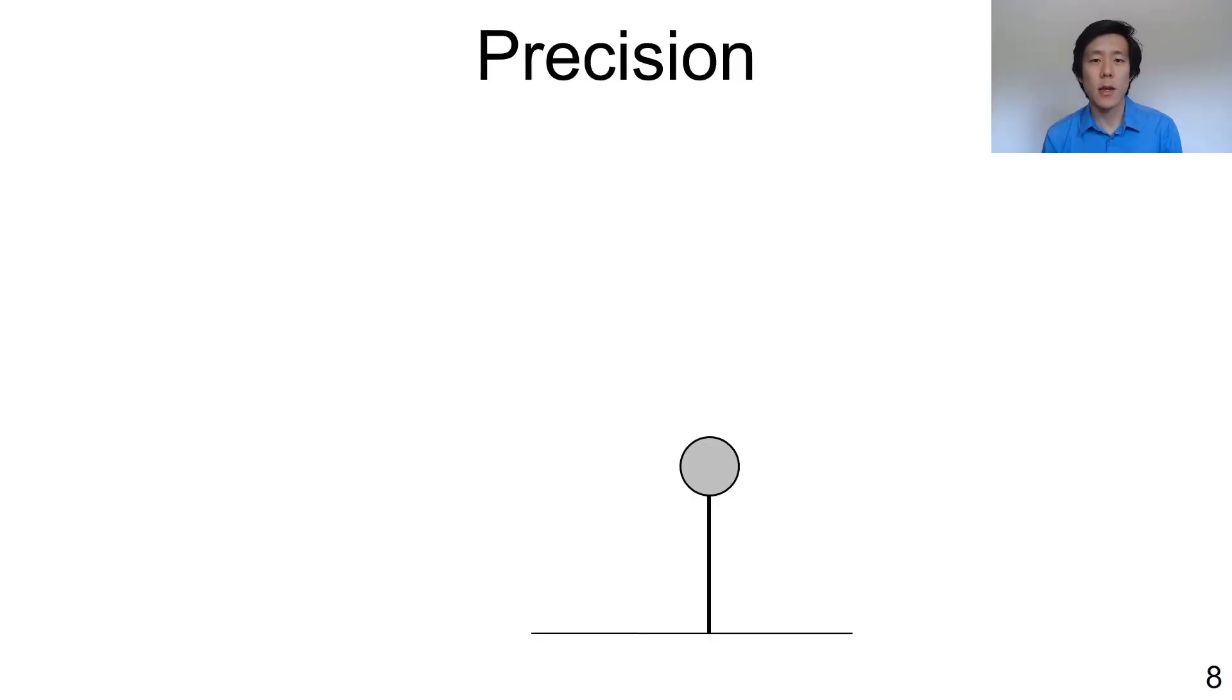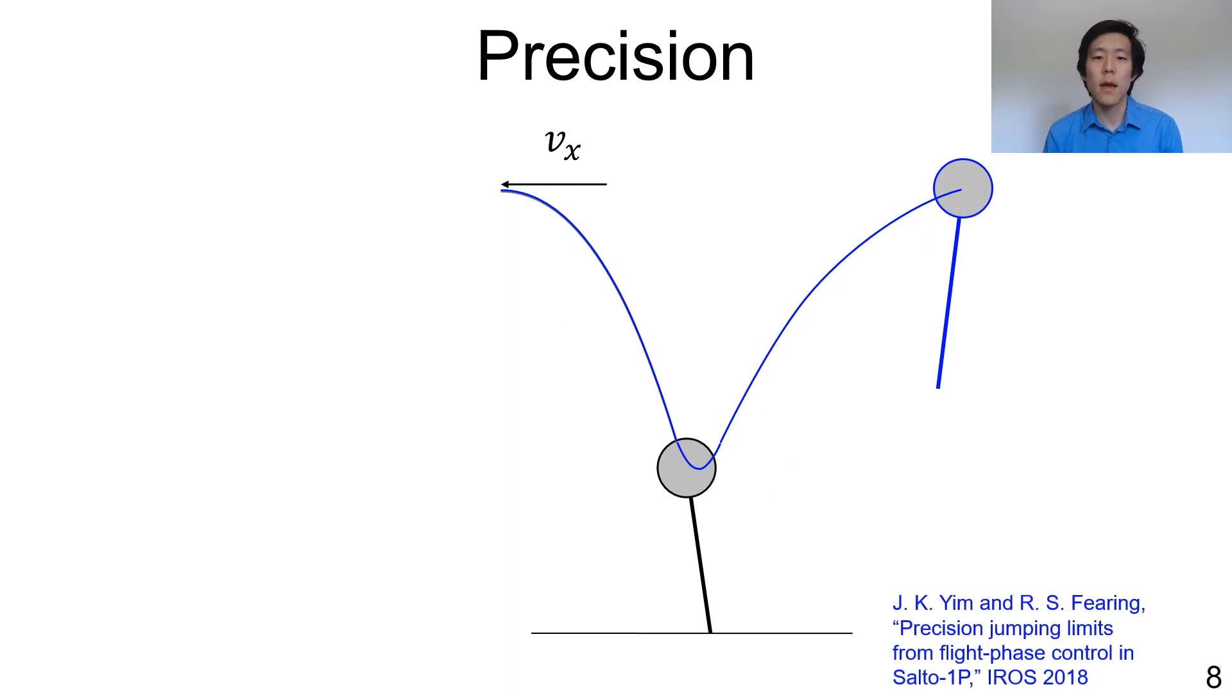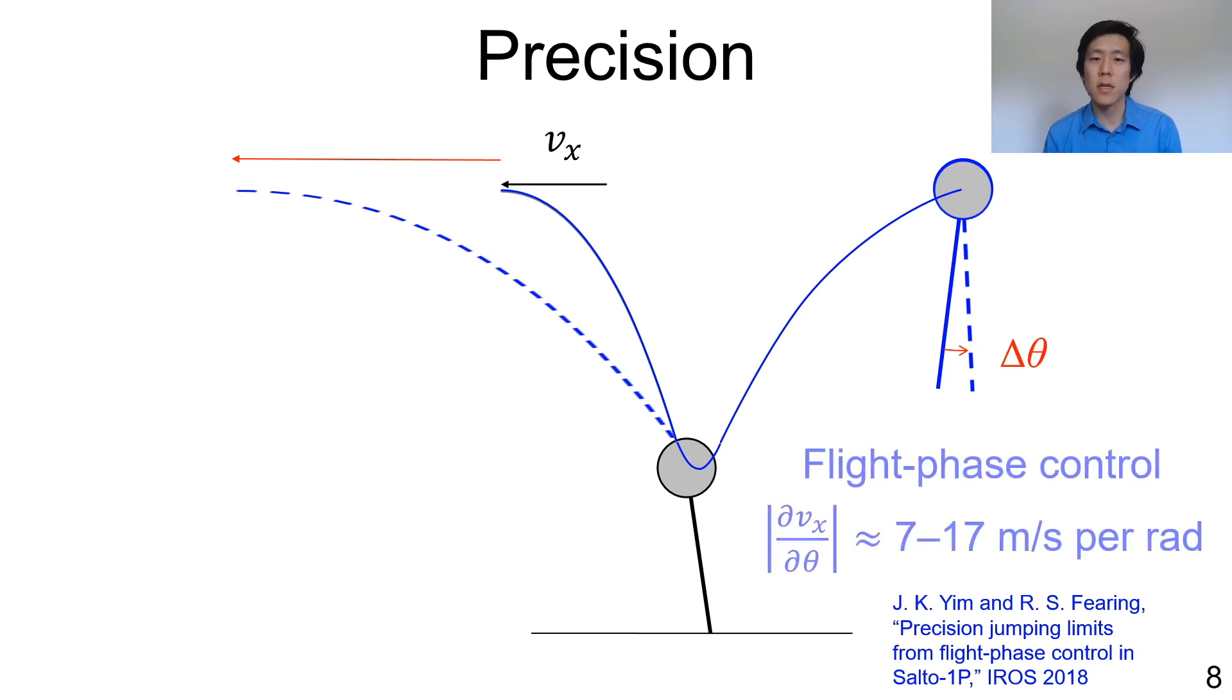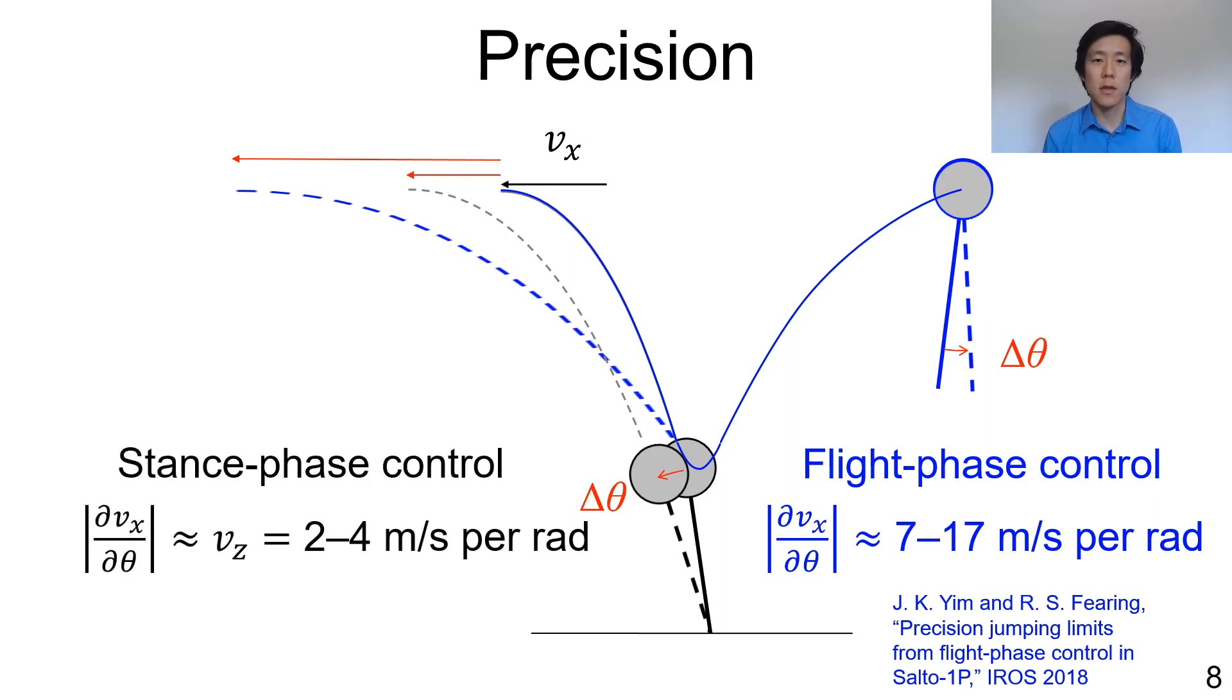We can now look at how precise we'd expect this motion to be. The horizontal velocity of the robot, and consequently the accuracy of the jump, will depend critically on the angle of the robot on lift-off, and we can compare the sensitivity angle to our previous work with flight phase control, in which the robot used touchdown angle in order to direct its next bounce. In our previous work, we showed that variation of the touchdown angle changed the horizontal velocity by about 7 to 17 meters per second per radian for Salto. In contrast, for the new stance phase launch, the horizontal velocity varies with the angle according to small angle approximation approximately with the magnitude of the vertical velocity on lift-off, which for Salto is 2 to 4 meters per second per radian.